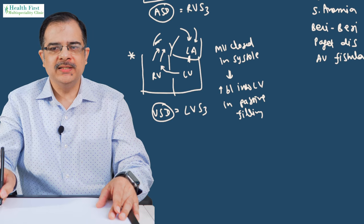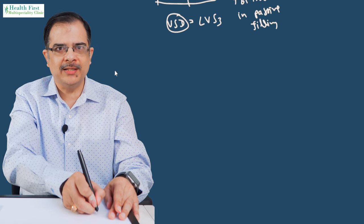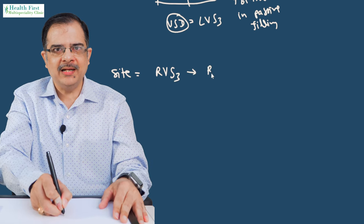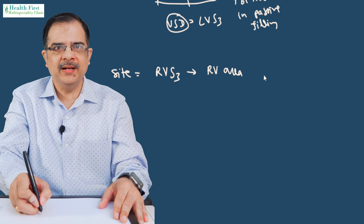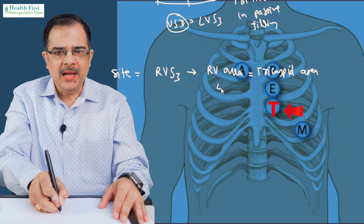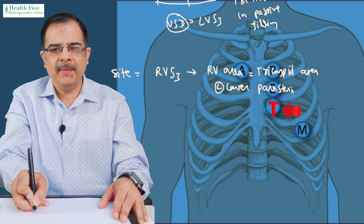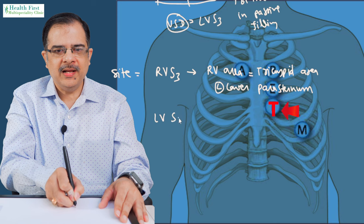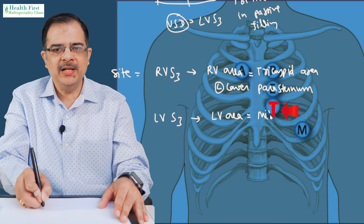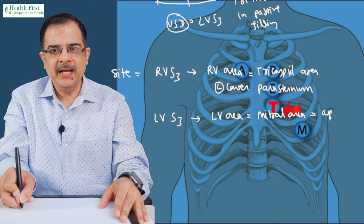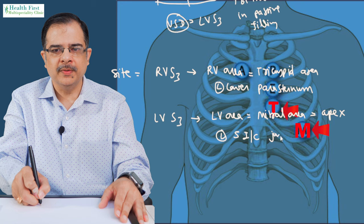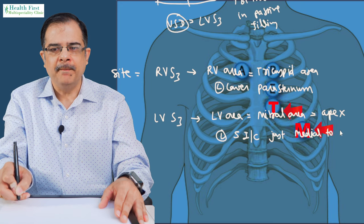Where should we place the stethoscope? For right ventricular S3, it is heard at the right ventricular area, also known as the tricuspid area, located at the left lower parasternal region. For left ventricular S3, it is heard at the left ventricular area, also known as the mitral area or apex — that is, the left fifth intercostal space just medial to the mid-clavicular line.